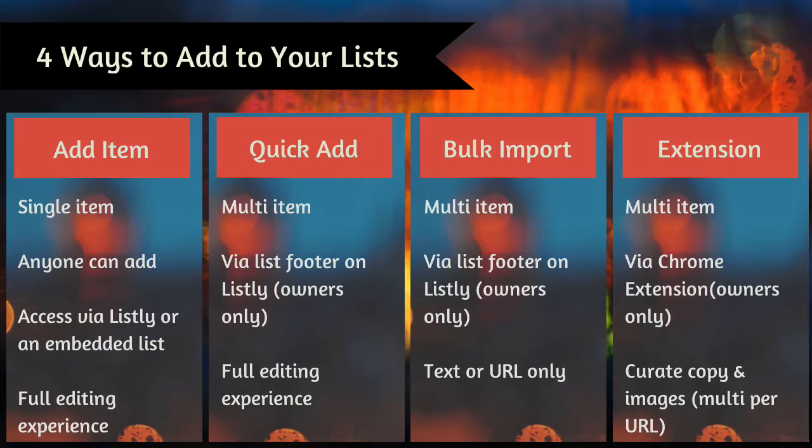To recap: we saw adding an item — adding a single item at a time. Anyone can use this interface; anyone can add to your list, and you can add via Listly or via an embedded list on a website, getting the full editing experience. Quick add lets you add multiple items at once — this is only for list owners, with full editing, but only to their own lists. Bulk import lets you import multiple items from the list footer, for list owners only, and you can paste in text or URLs, up to 25 items at a time.